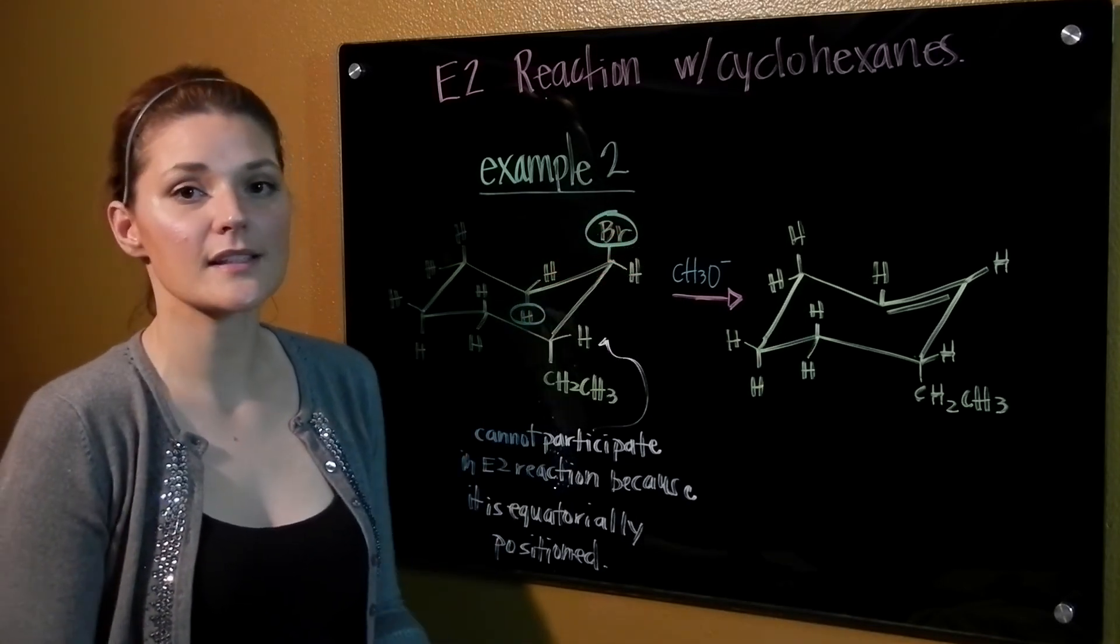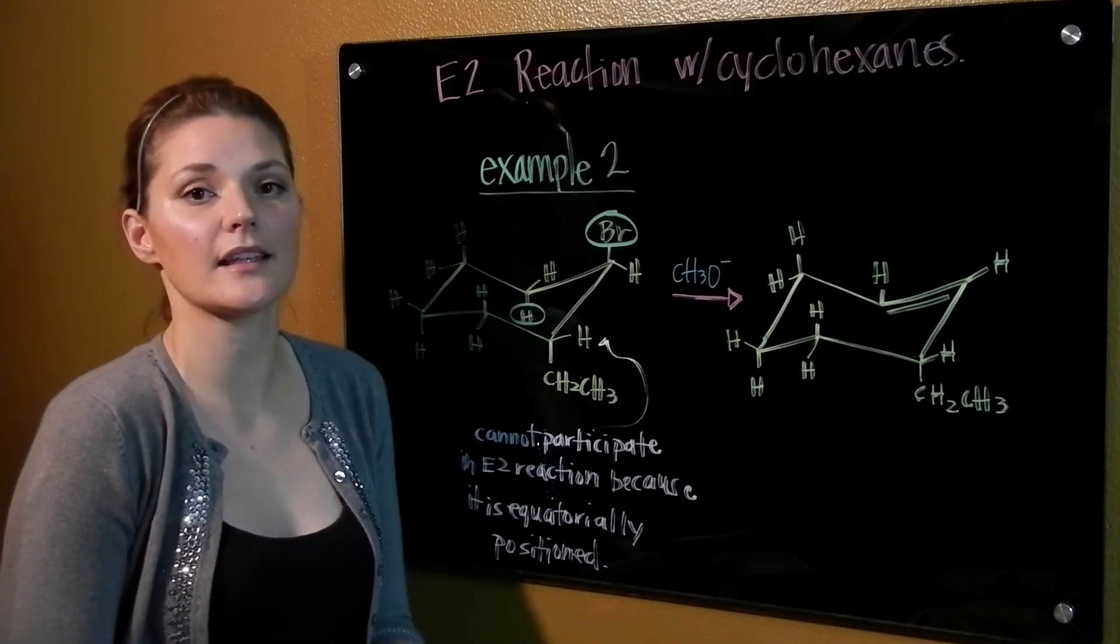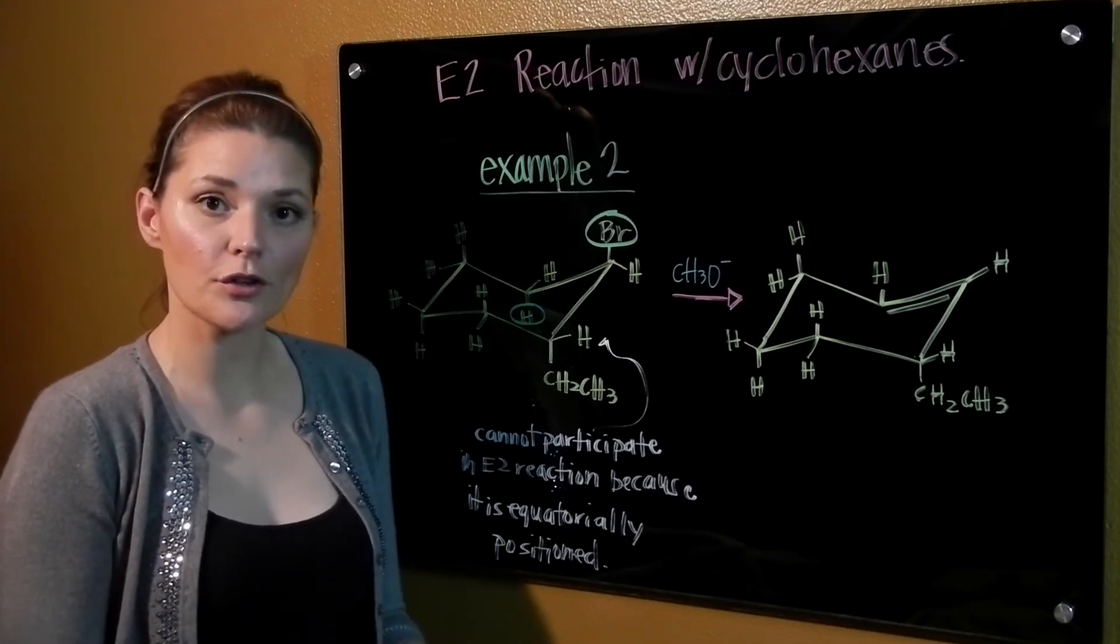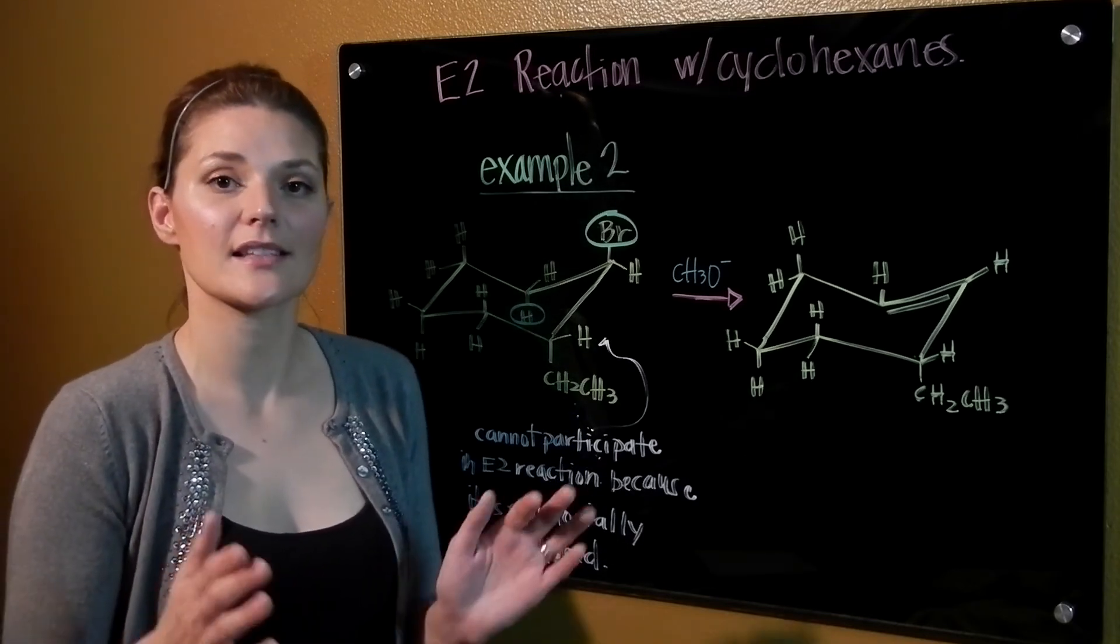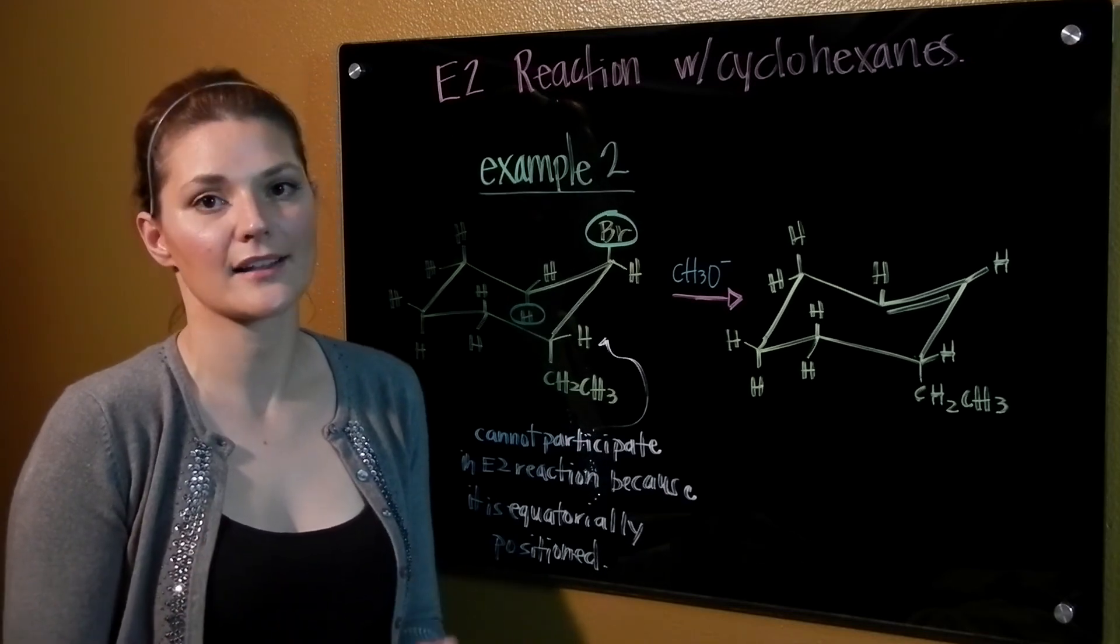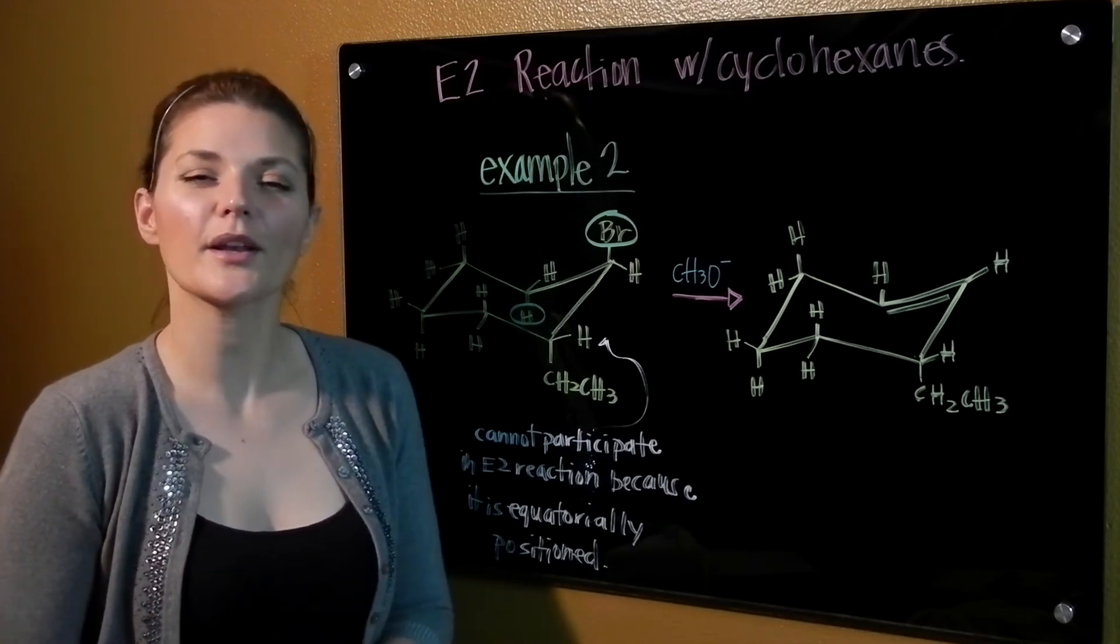So remember, in this case here, once again, you're making sure that your halogen is located axially. And you're verifying which of your beta carbons actually has the hydrogen located in an axial position. Let's take a look at one more example.